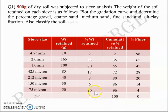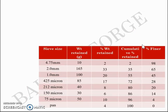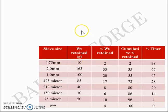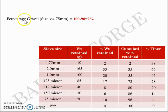For the particle size distribution curve, what you should do is plot sieve size versus percentage finer. Now before that, you are asked to get the percentage gravel. Percentage gravel is nothing but the percentage above the 4.75 mm sieve, which is 2%.